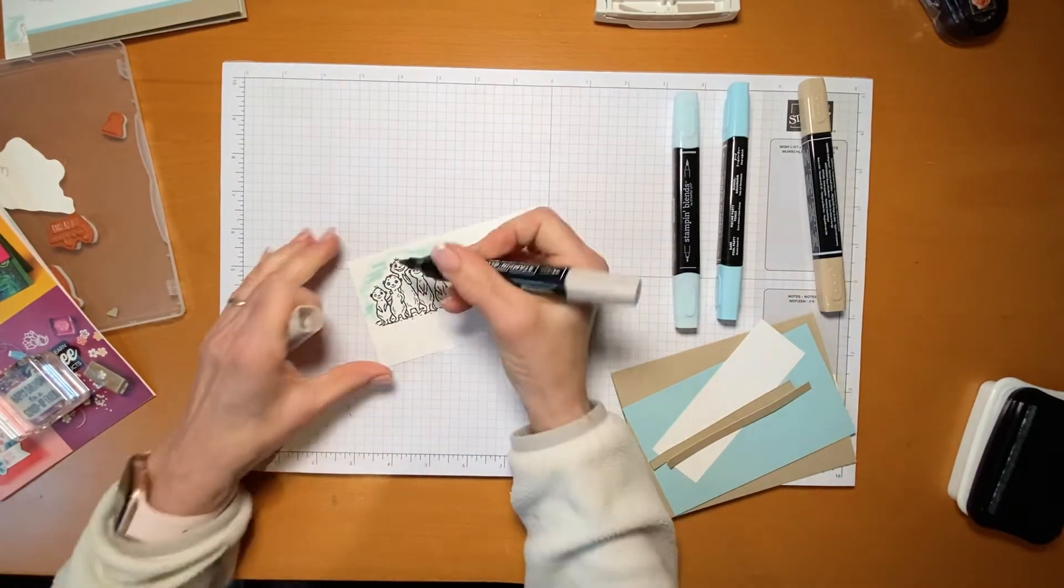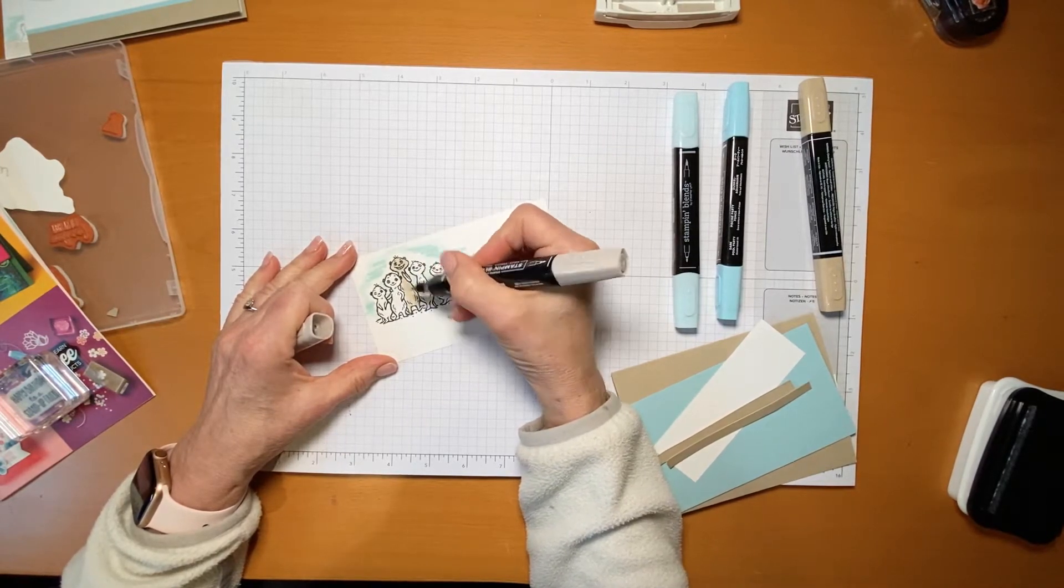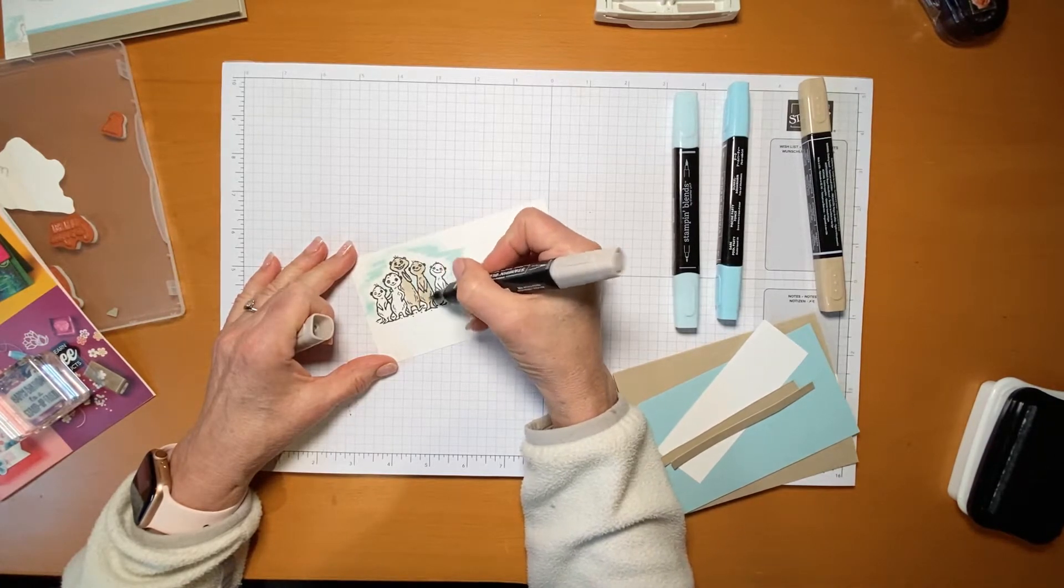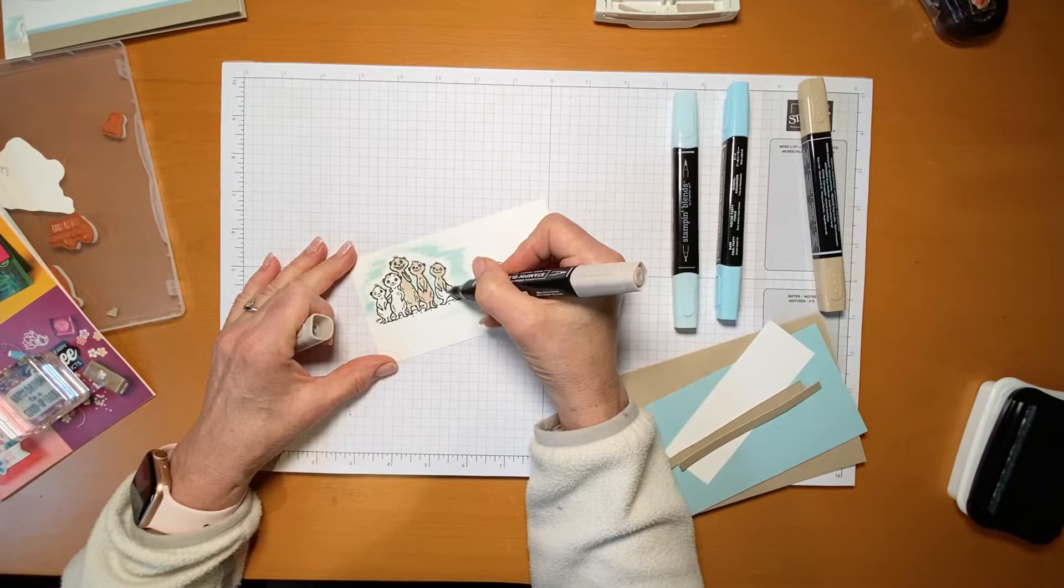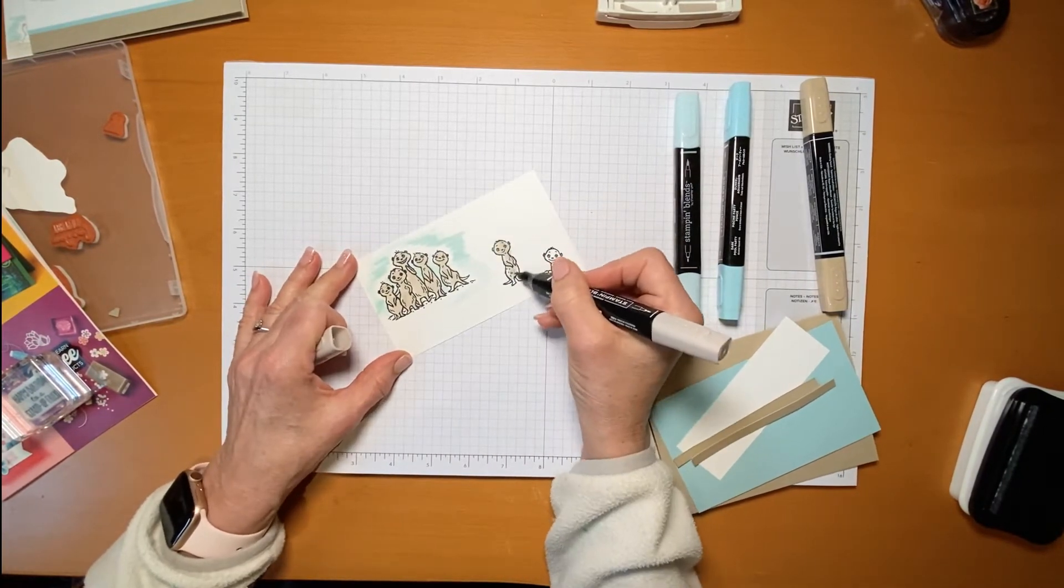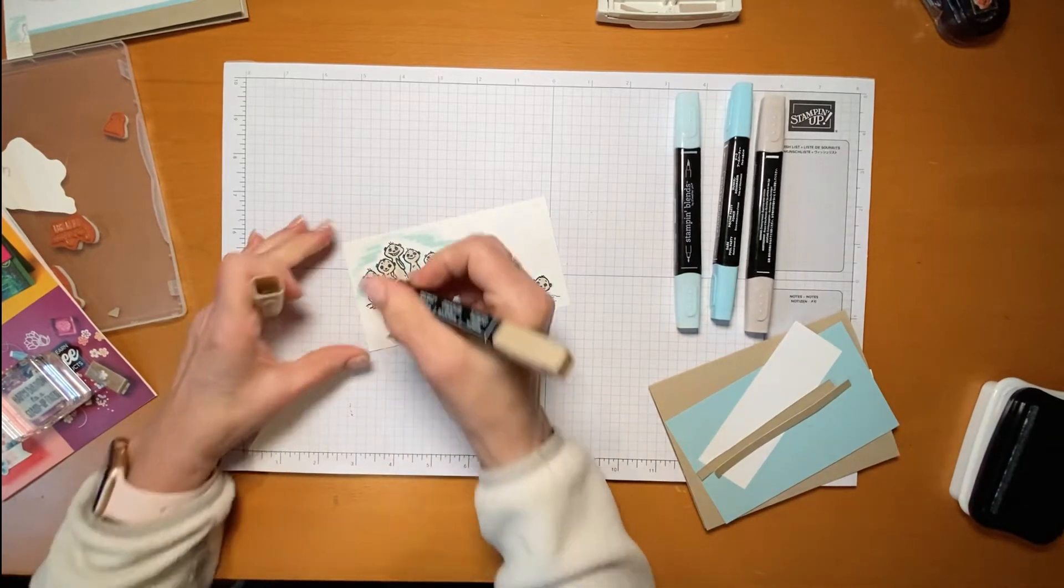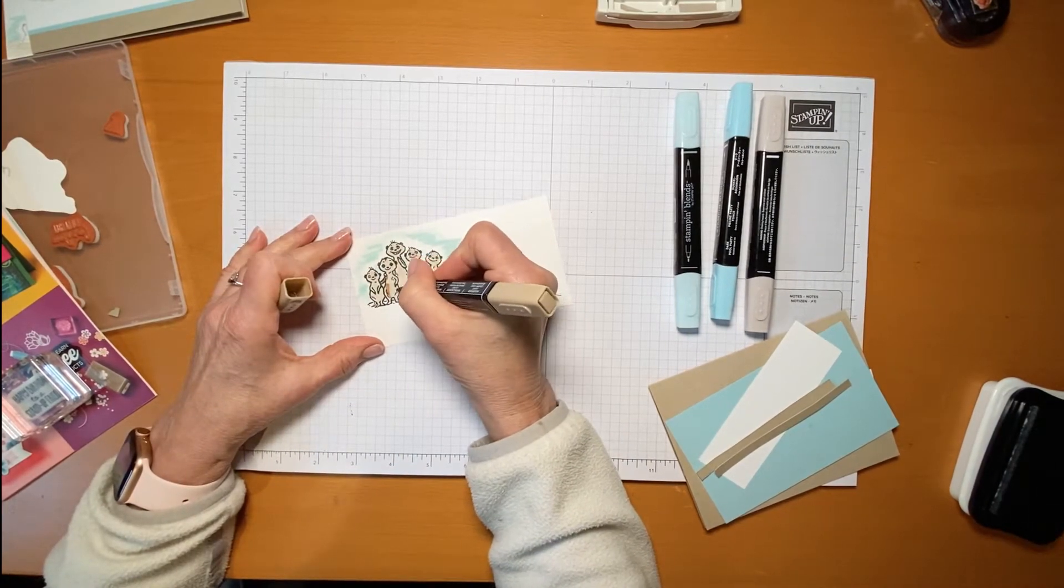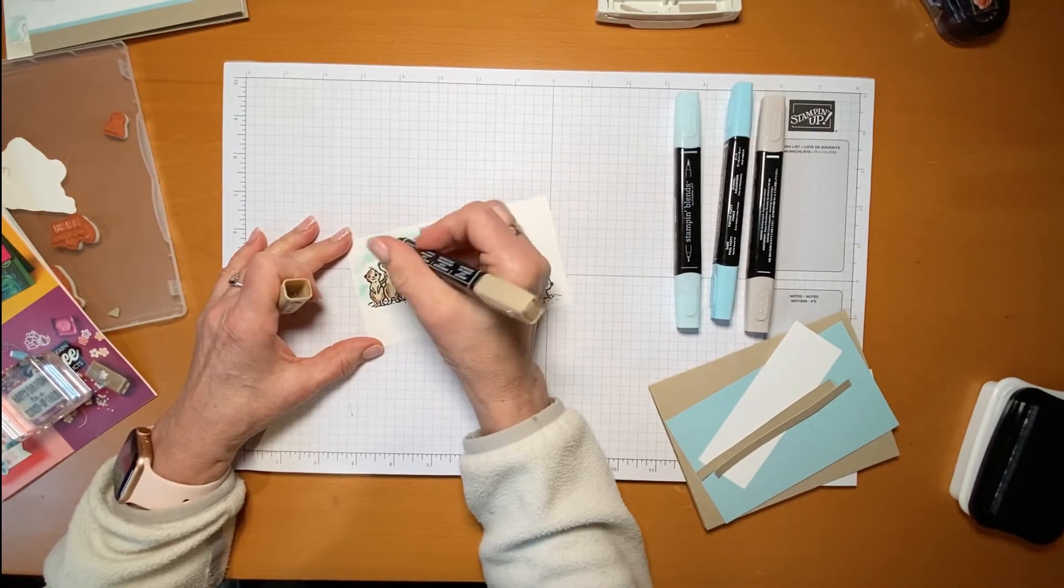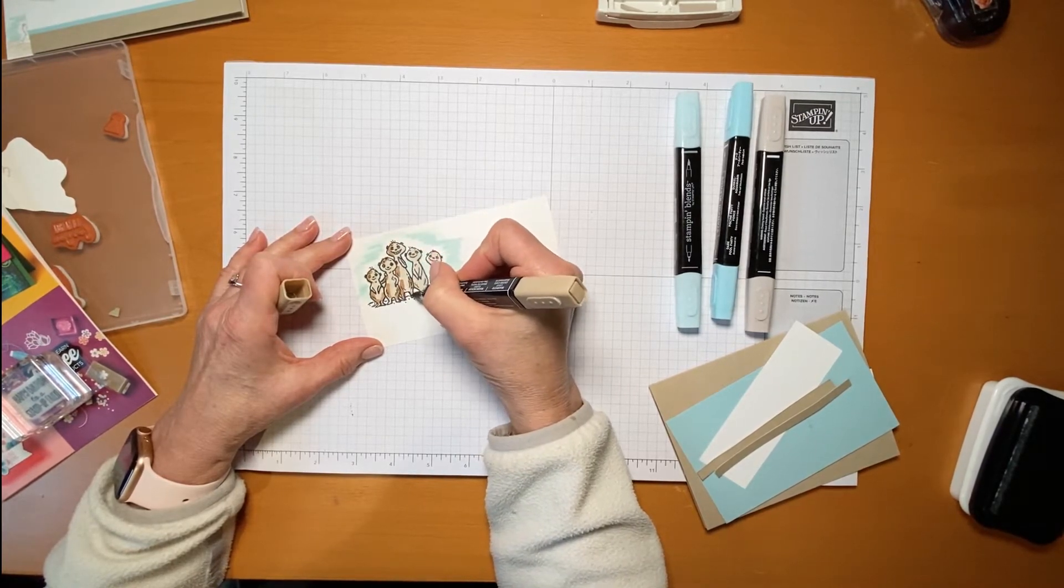And now I'm going to color my little guys. So here's my lighter color and I'll just add a little bit of depth to the color and blend it in. This is the Crumb Cake Dark Marker and the Crumb Cake Light.